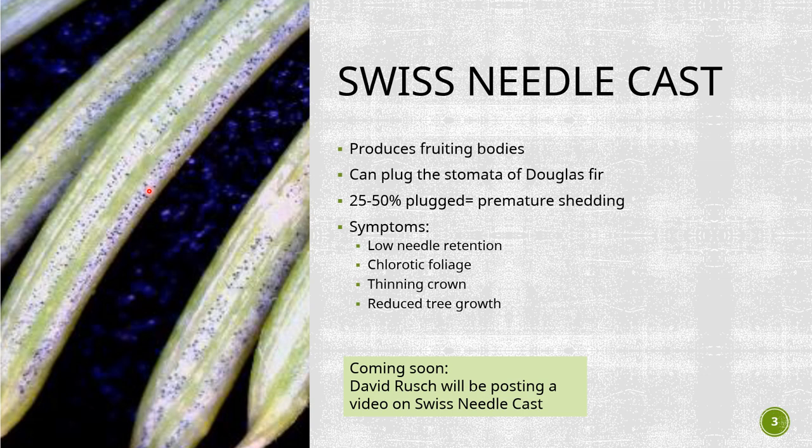These fruiting bodies can plug the stomata of Douglas fir. The stomata are microscopic pores on the needle surface that facilitate gas exchange with the atmosphere. If they get plugged, the needles can't take in carbon. When you have 25 to 50% of the stomata blocked, the needles are basically starved of carbon. The needles then turn yellow and prematurely shed. If you've seen some severely affected trees, they might have had only one or two years of needles in their outer crown.